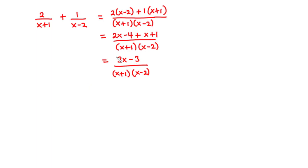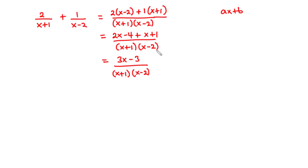The reverse process of splitting this rational function into smaller fractions or its component fractions is what we call resolving into partial fractions. Now the denominator of a rational function is said to have linear factors if it can be factorized into two or more factors that can be expressed in the form ax plus b. In that case, the numerator of each of the factors is a constant if the function is to be resolved into partial fractions.